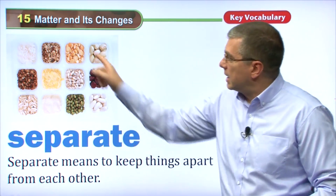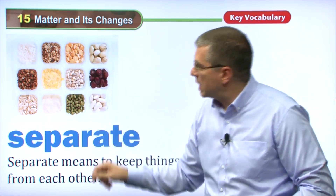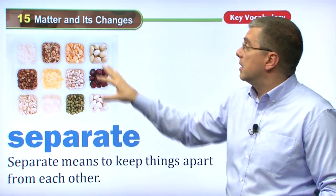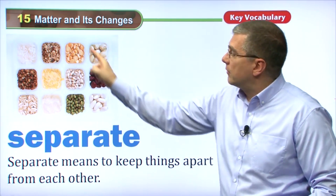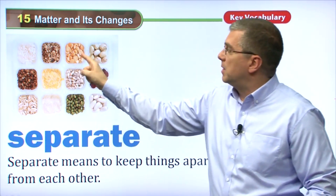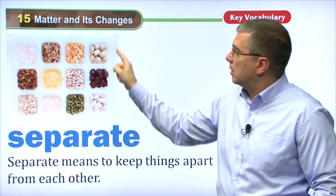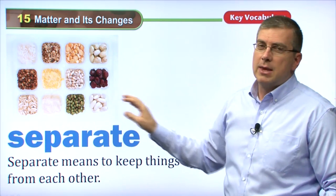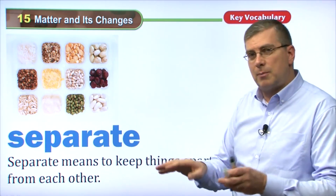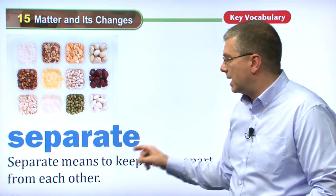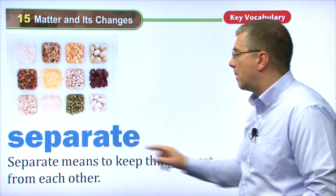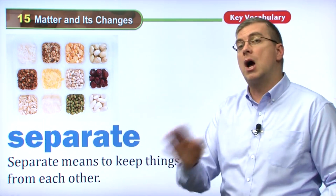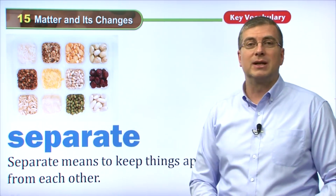Now if you separate something — here we have a picture of nuts. These are different types of nuts and maybe some grains. These are different types of nuts that are separated; they're not mixed up, they're all separate. You have one type of nut here, another type, this looks like a peanut, and another type of nut here — beans, and this looks like dates or persimmon. They're kept by themselves. So separate means to keep things apart from each other. Separate is the opposite of mixing.